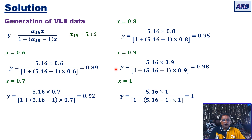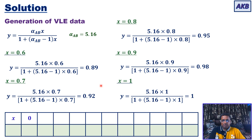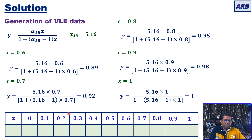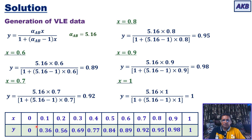After calculating all y values, we collect them into a table. We have the selected x values — 0, 0.1, 0.2, and so forth up to 1 — and the corresponding y values. Each x value is in equilibrium with its corresponding y value. This table is the required VLE data.